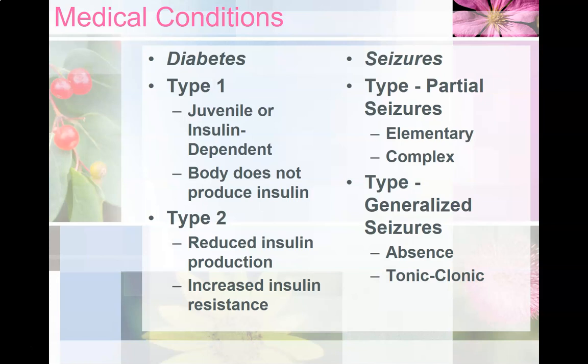Seizures are defined as when a group of abnormal brain cells fires concurrently. Epilepsy is a reoccurring seizure disorder. There are two classifications of seizures: partial and generalized. Partial seizures occur when the discharge from the abnormal brain cells remains in only one section of the brain. Elementary partial seizures involve only one section of the brain, and the person does not lose consciousness. Complex partial seizures involve the parts of the brain that control thought processes — a person is not unconscious, but does experience a reduction in consciousness.